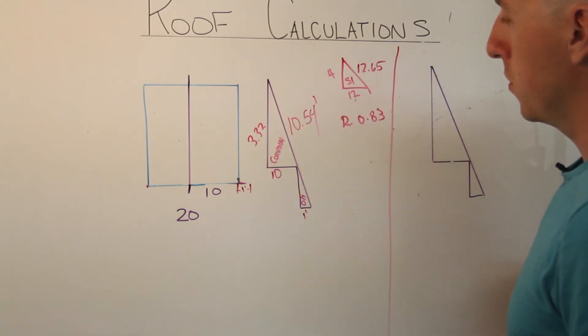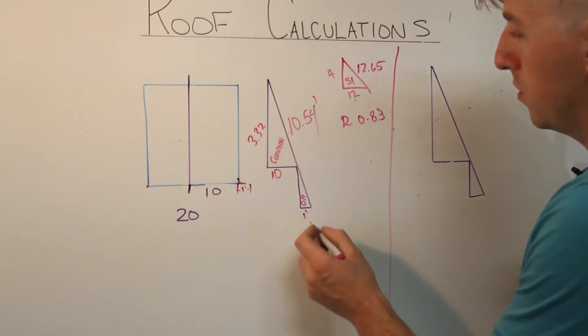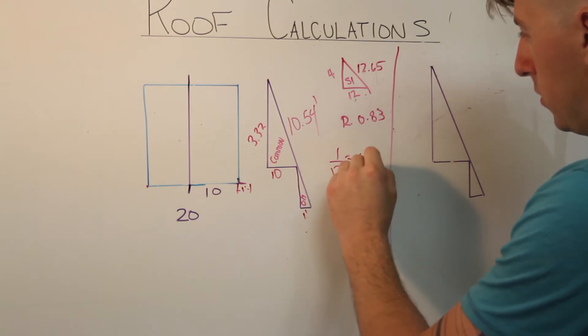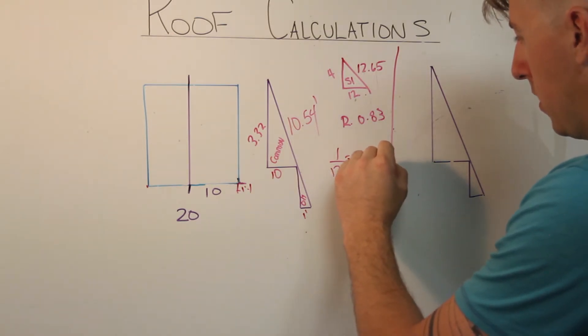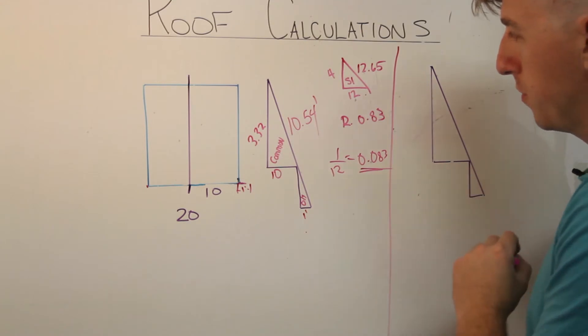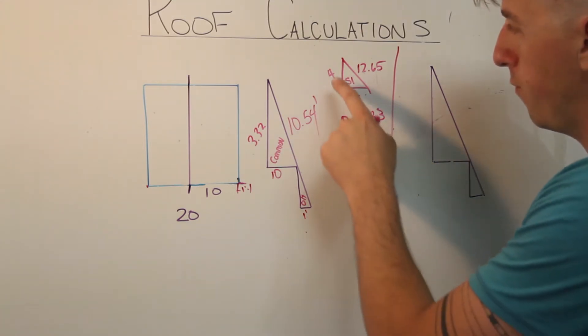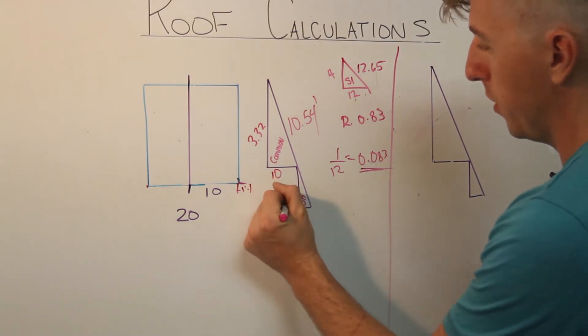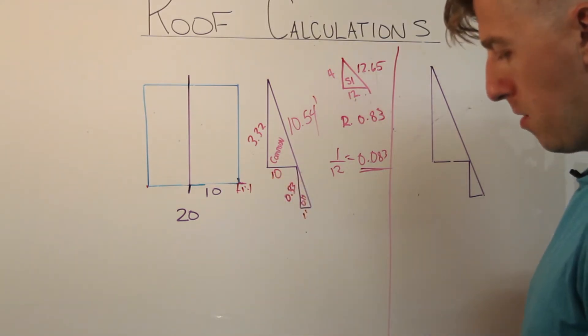All these triangles are related. We need to find the ratio between this smaller triangle and this bigger triangle. So 1 divided by 12, 0.083. That's the ratio for these smaller ones. 4 times 0.083, 0.33.